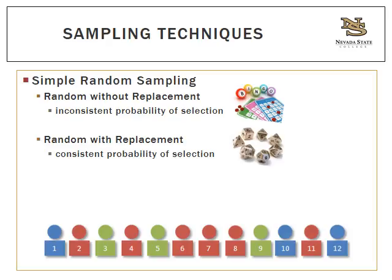There are two types of random sampling: without replacement and with replacement. With random sampling without replacement, a selection is made and then not put back into the population before the next selection. Think of bingo — each letter and number combination can only be selected once. If B50 is drawn, it's not replaced. This means there's an inconsistent probability from one selection to the next: if you start with a pool of 100 and make a selection, now you have 99, then 98, and so on. The probability changes for each selection because the population is diminishing.